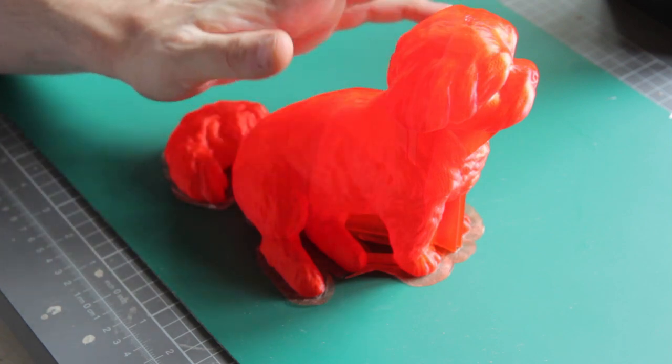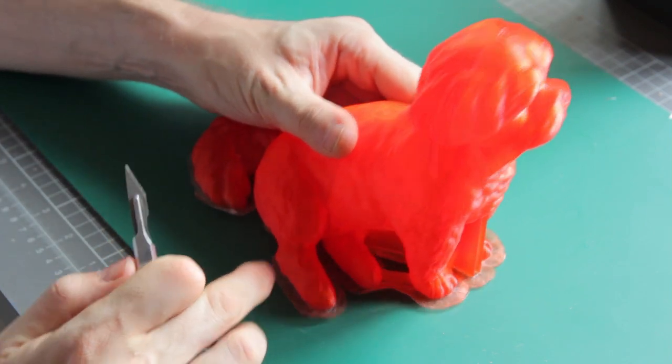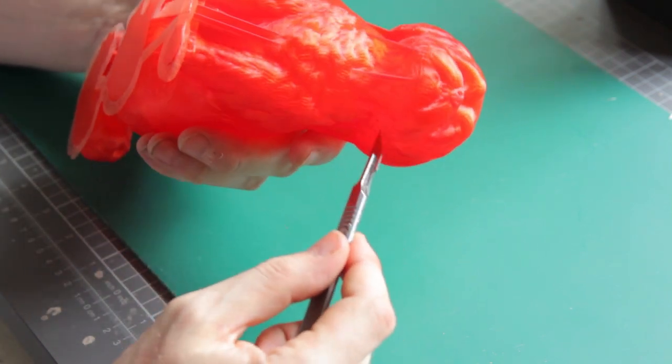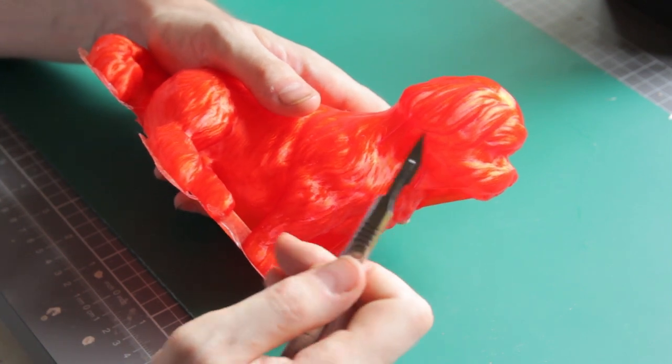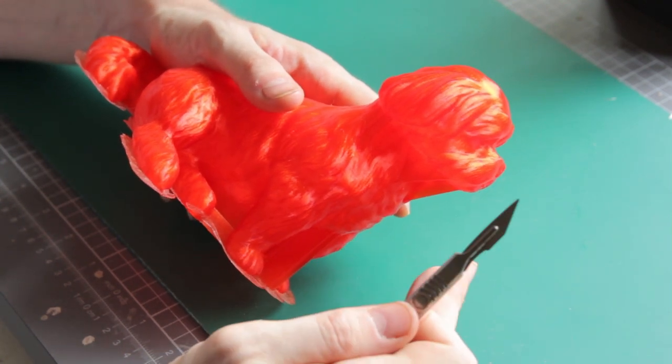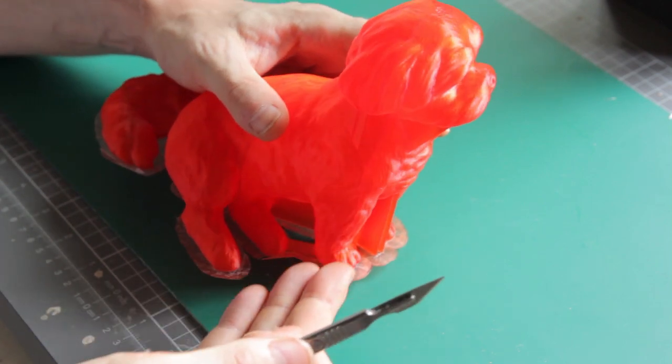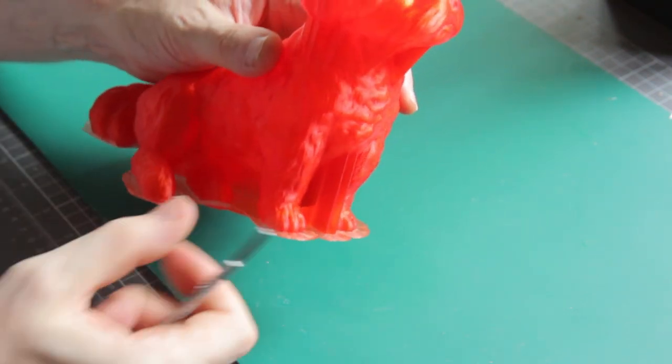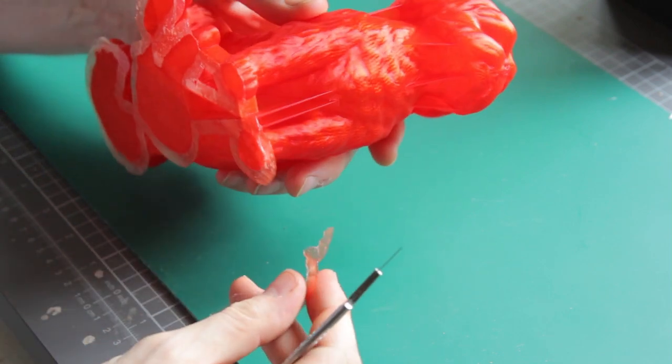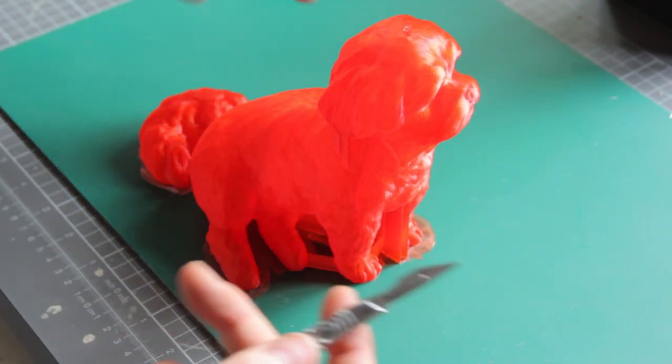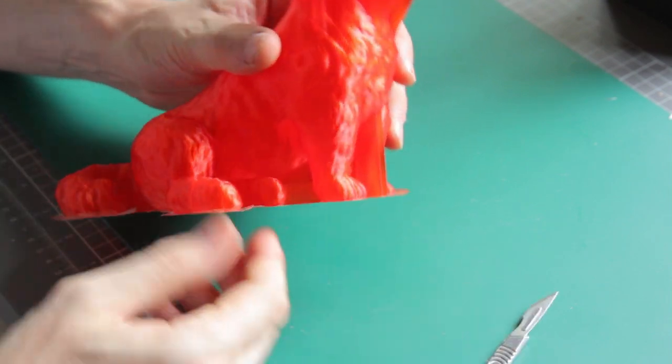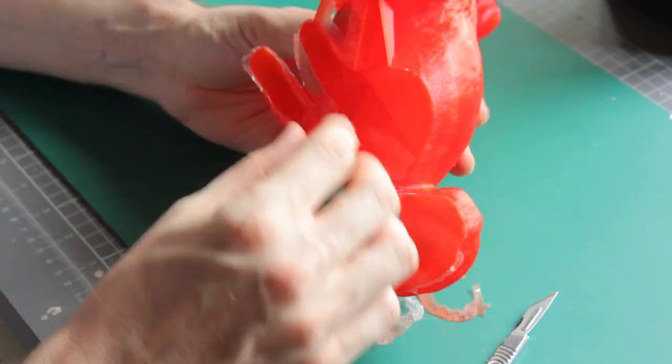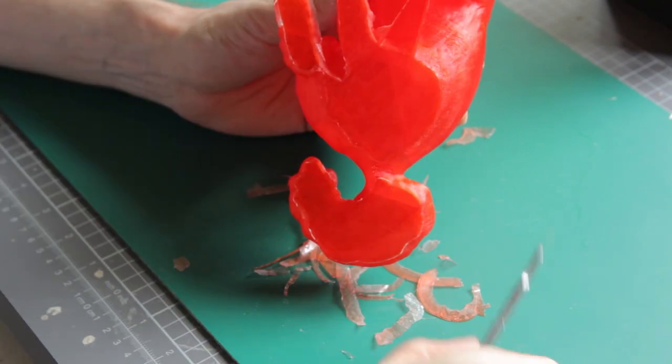This is my Bichon Frise model, so the first thing I'm going to do for cleanup is get rid of the skirt lines and the manual support I've put in under here. I find that automatic supports take too long to print. I saved about nine to eleven hours by doing my own supports, which are essentially just lines of support. I'm just going to clean this all up now, then I'll show you how I get rid of my other lines using the burr tool.